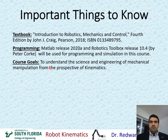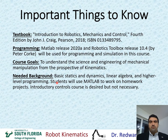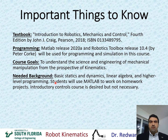The goal of this course is to understand the science and engineering of mechanical manipulation from the perspective of kinematics. We're not going to be talking about dynamics — the whole course is about kinematics — but we will talk slightly about velocities and forces as well in Chapter 5. The needed background for this course includes basic statics and dynamics, linear algebra that includes matrices, multiplying matrices, inverting matrices, and so forth, and some higher-level programming, which includes knowing flowcharts, how to make programs, loops, and so forth.